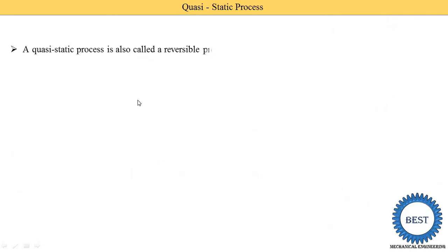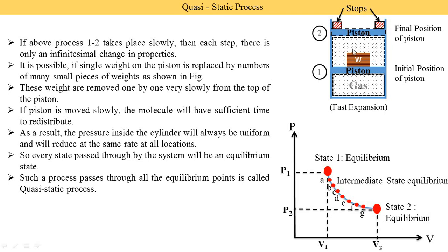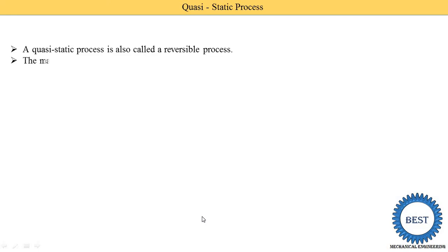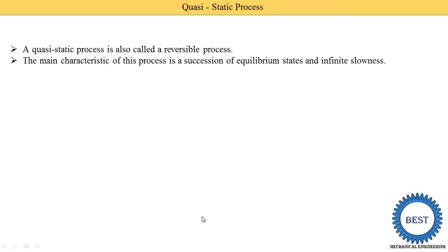A quasi-static process is also called a reversible process. If we put the weights back one by one — earlier we removed them, now we start putting them back — the same compression of the gas occurs and it follows the process from state 2 to G, F, E, D, C, B, A. That is called the reversible process. The main characteristic of this process is the succession of equilibrium states and infinite slowness — meaning the system runs very slowly and achieves equilibrium conditions at all states of the system.